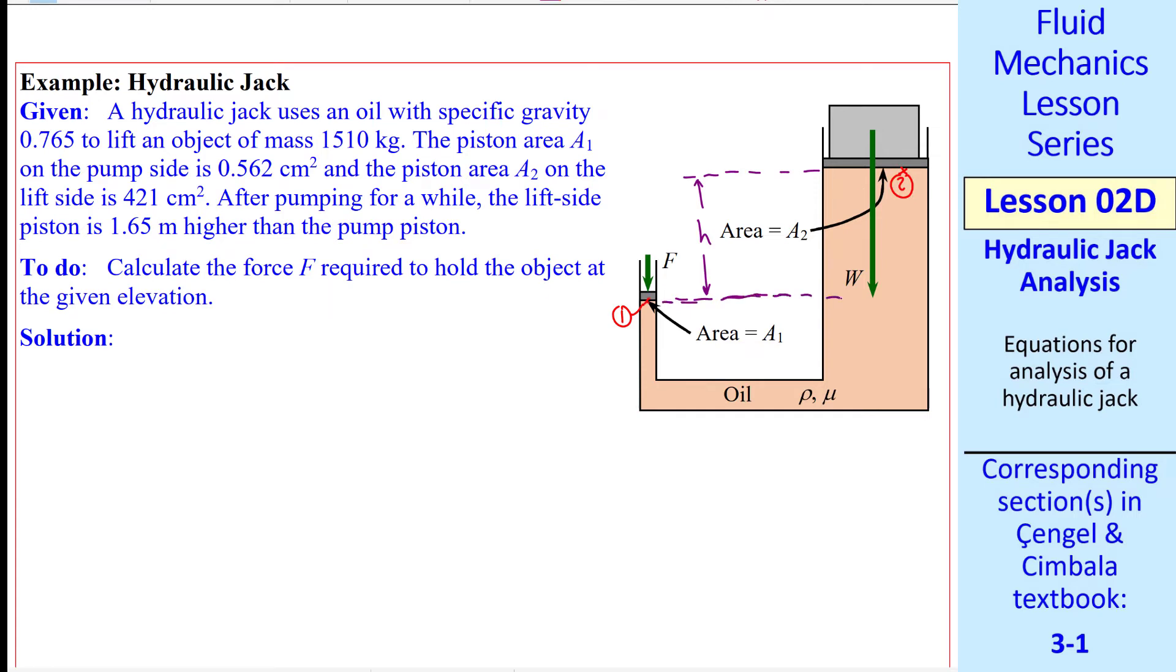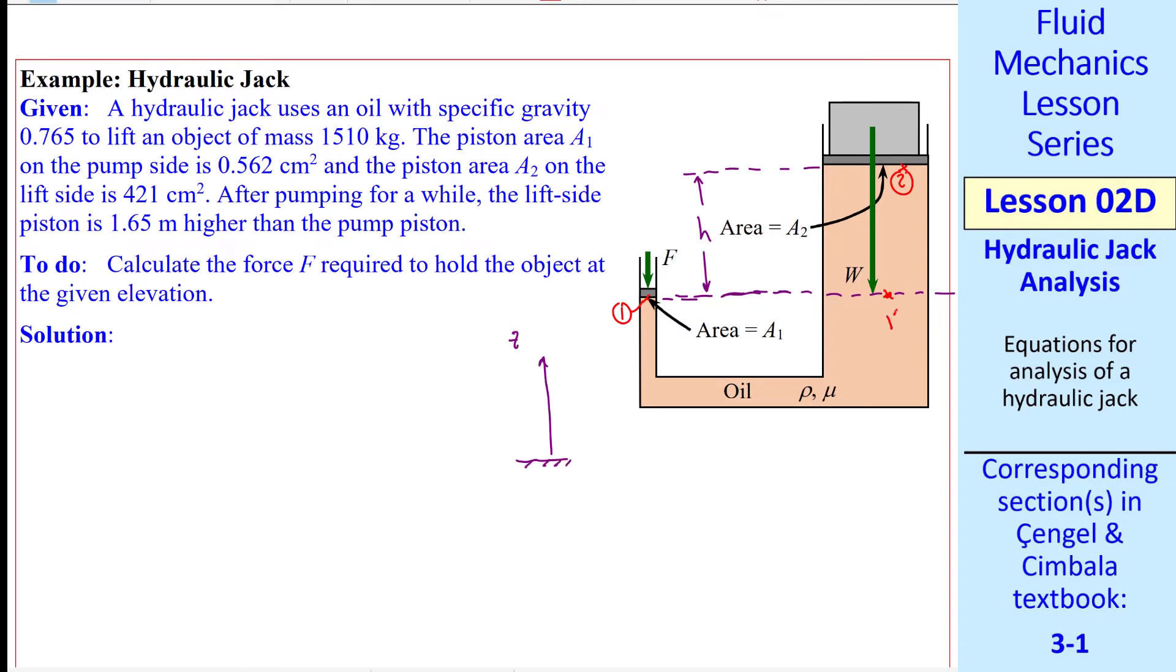Let's call this location 1 and this location 2. If we go straight across at the same elevation, that can be relative to some arbitrary reference frame. Let's call this location 1 prime, since we can draw a continuous curve from 1 to 1 prime through the same fluid. And since they are both at the same elevation, we know that P1 has to equal P1 prime.